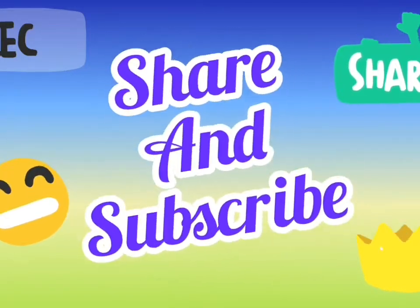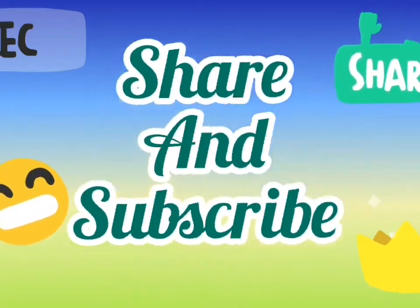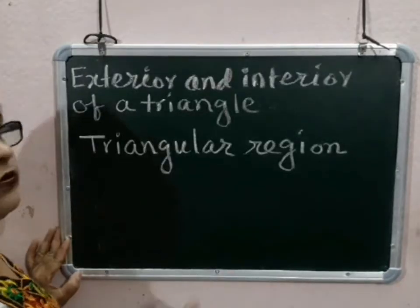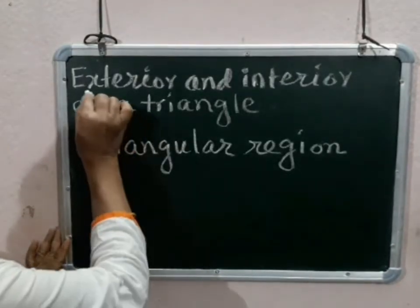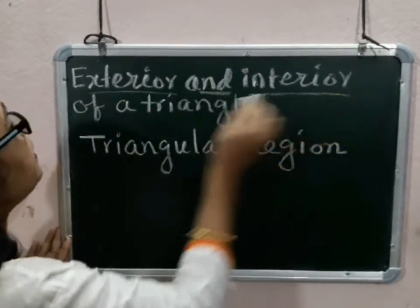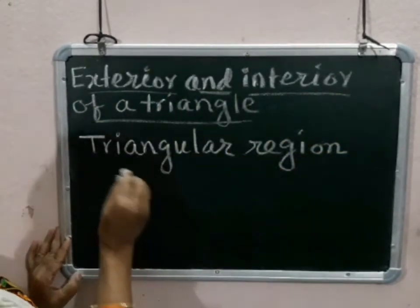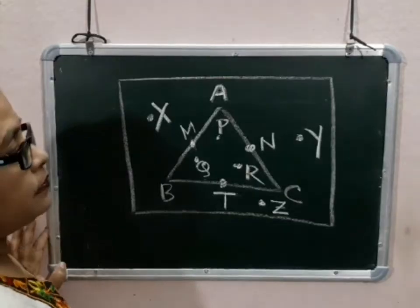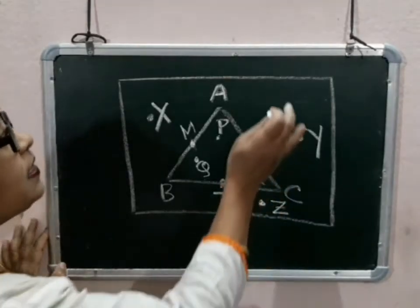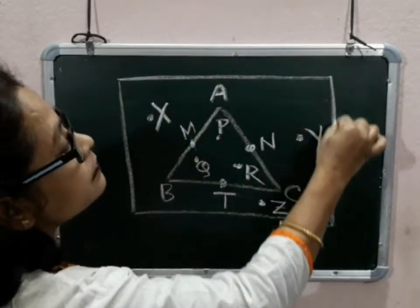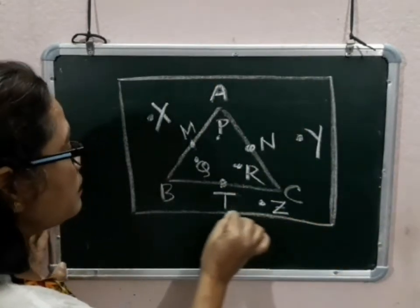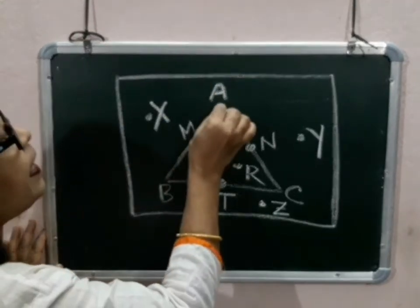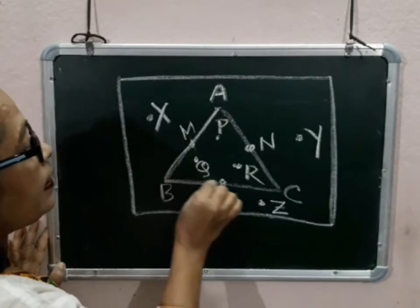Good morning, students. Today's topic is exterior and interior of a triangle, and triangular region. This is a plane and this is a triangle ABC.